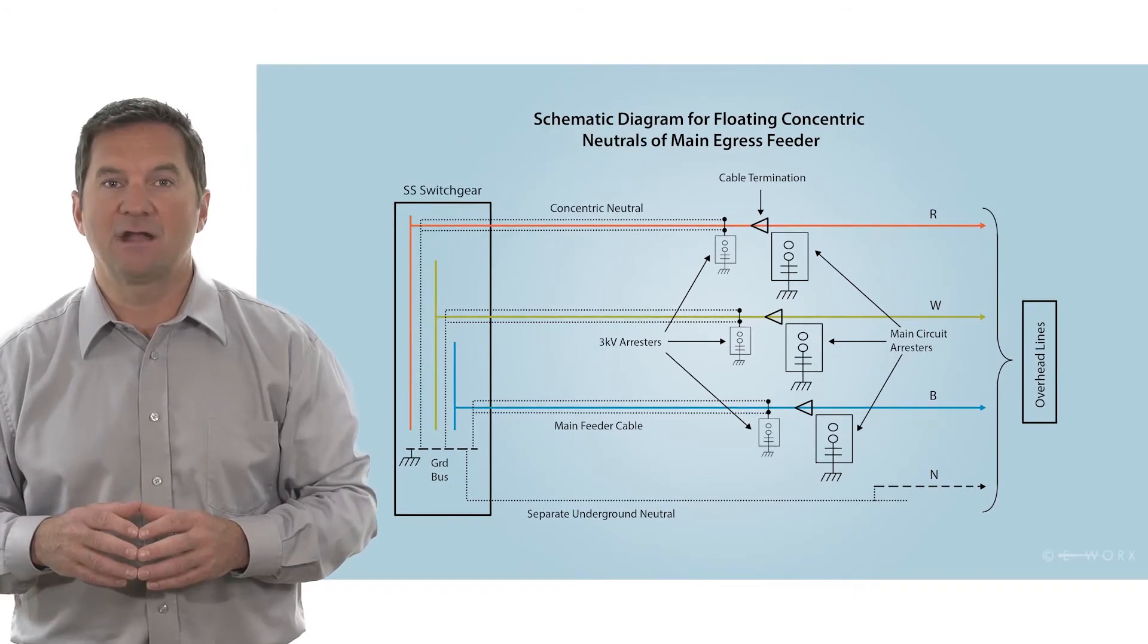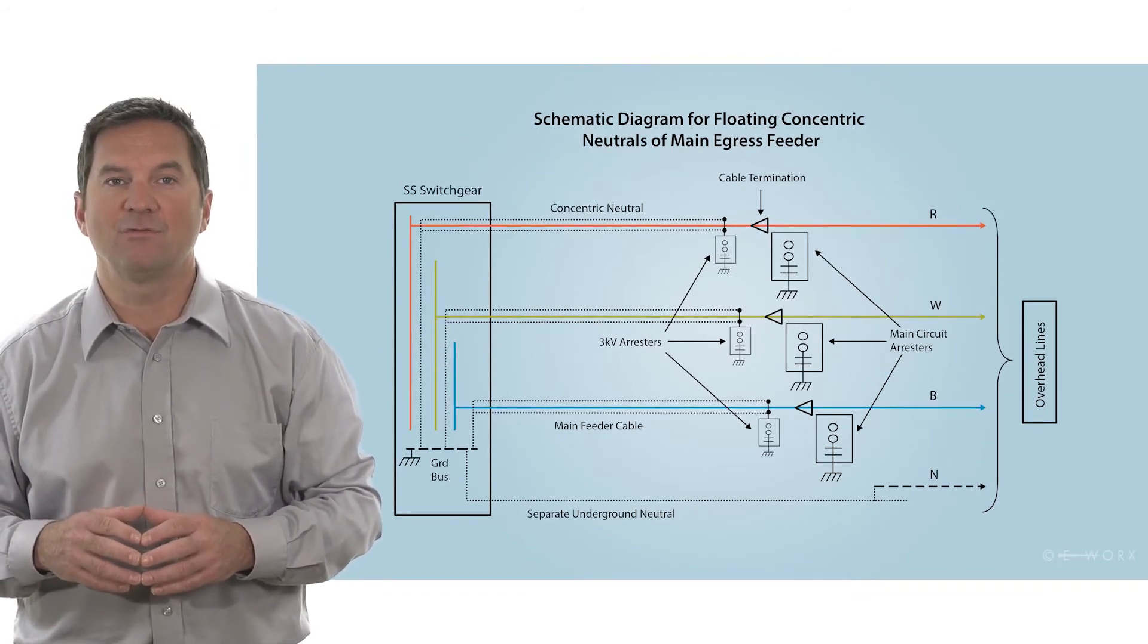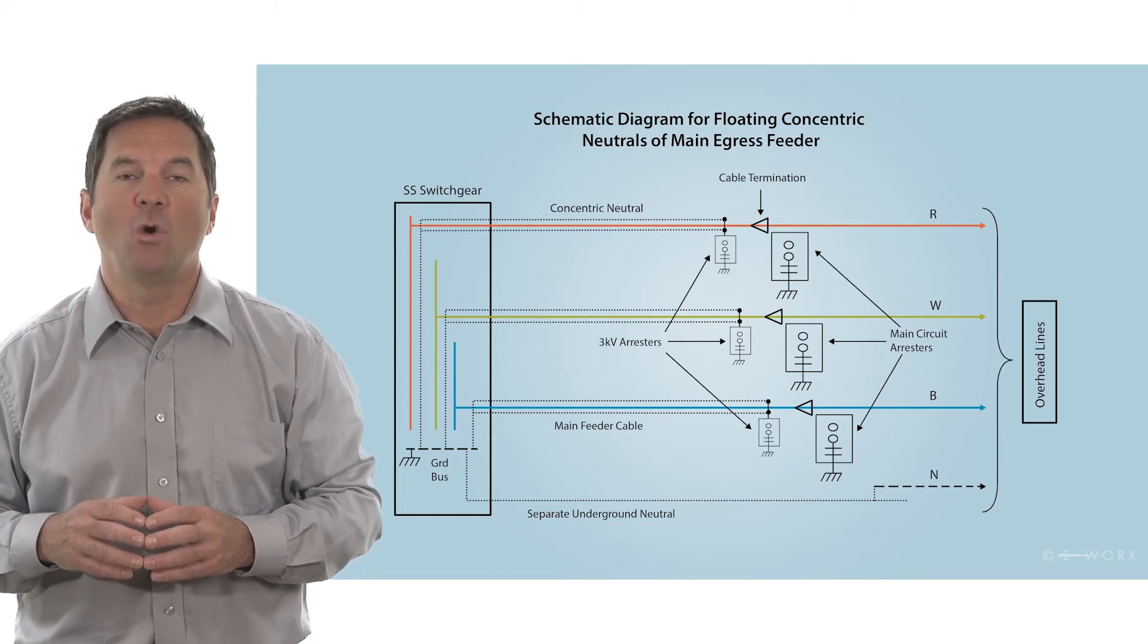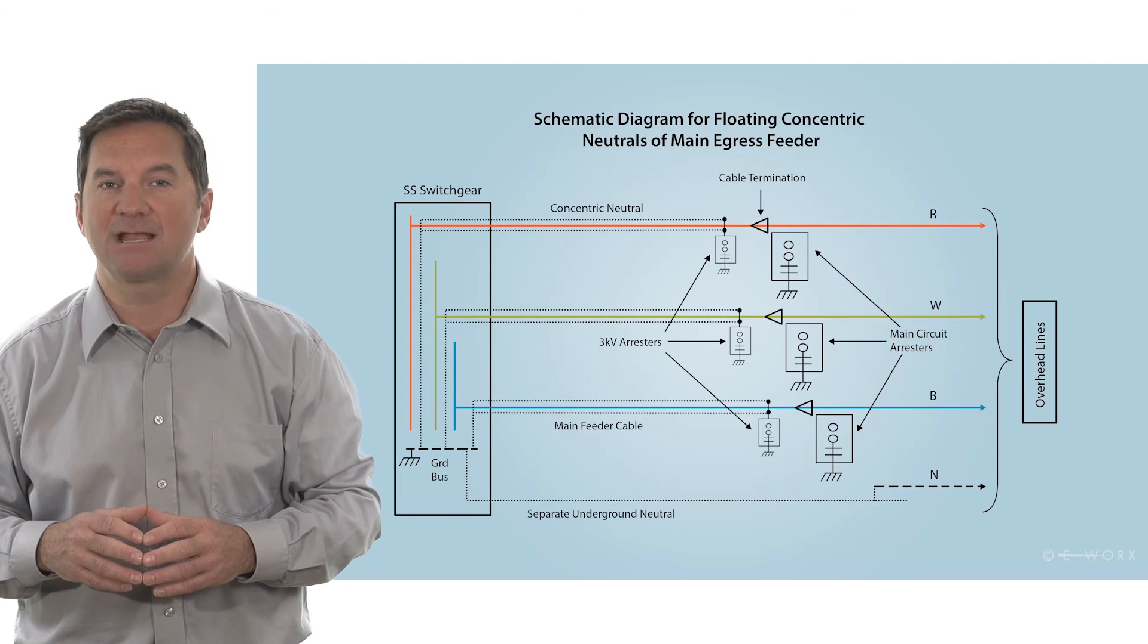The phase conductors are connected to the main circuit arrestor to protect the cable from lightning strikes or overvoltage on the overhead section.